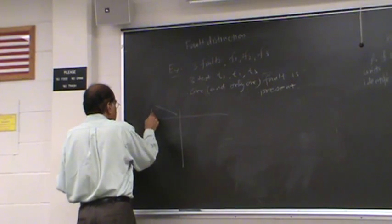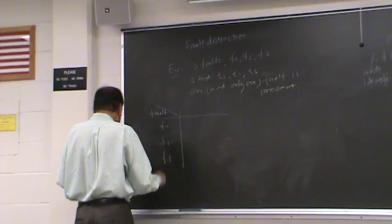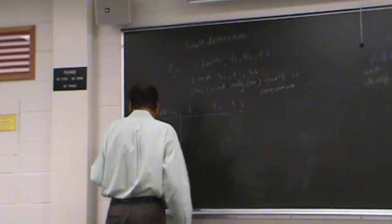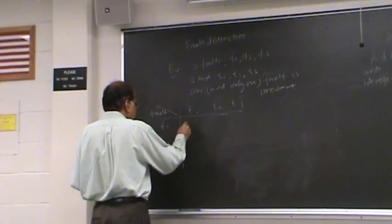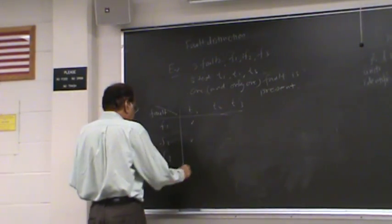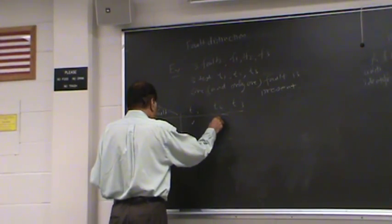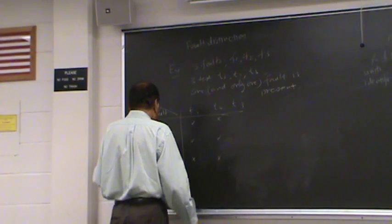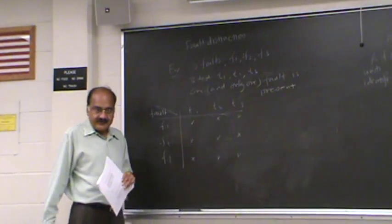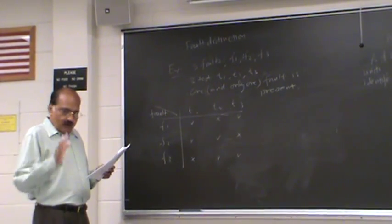Here, we have the faults: F1, F2, F3. And test T1, T2, T3. And let us assume that T1 tests for F1 and tests for F2, and does not test for F3. And T2 does not test for this, but it tests for these. And T3 tests for this. Does not test for this. And tests for this.